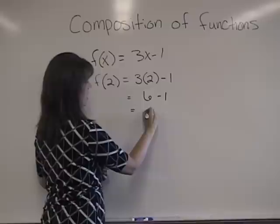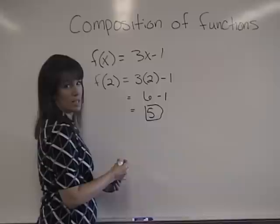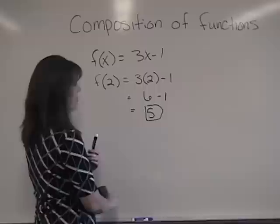So now we have 3 times 2 is 6 take away 1, and we know that 6 take away 1 is 5. So when we evaluate this function at 2, the answer is 5. And I just showed you that simple evaluation because we're going to use that same concept with composition.